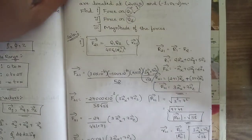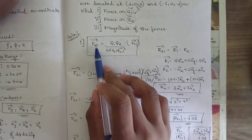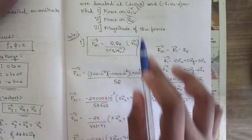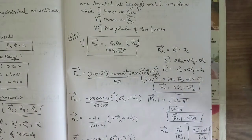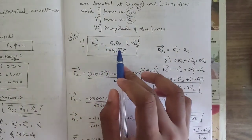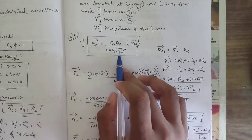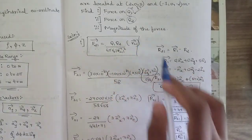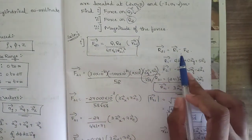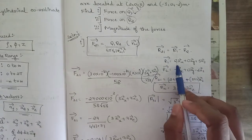First, we find force on q1, represented as F21 — that is, force on q1 due to q2. According to Coulomb's law, the formula for force is: F21 = (1 / 4πε₀) × (q1 × q2) / |r21|² × unit vector r21. First, we need to find r21, which is r1 minus r2.